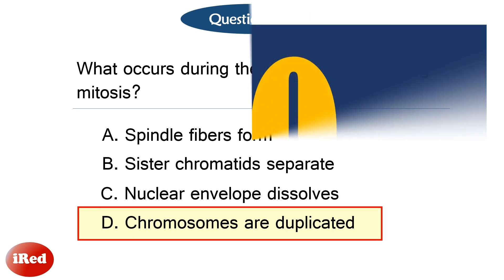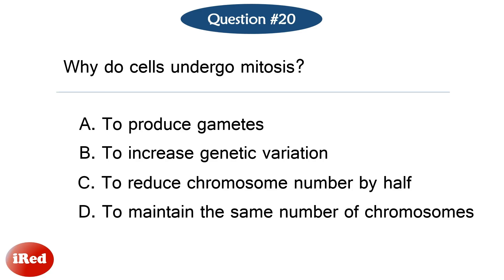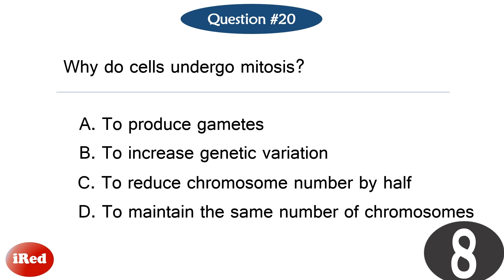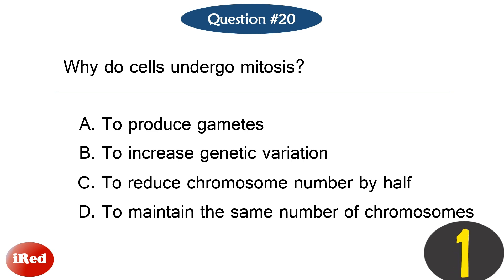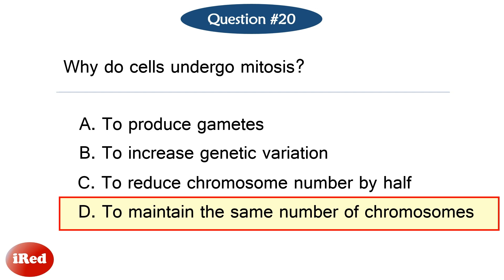Question number twenty. Why do cells undergo mitosis? The correct answer is letter D: to maintain the same number of chromosomes.